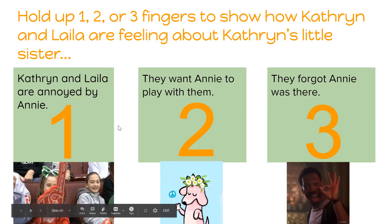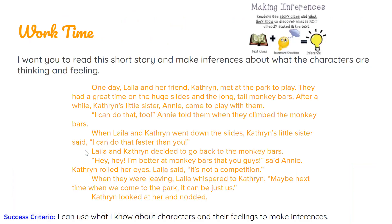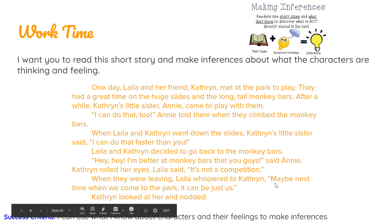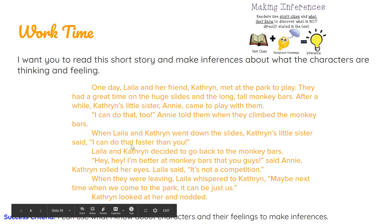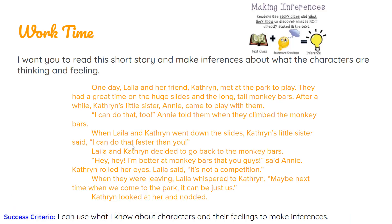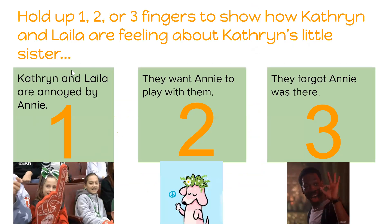Very good. The correct answer is one. Catherine and Layla are annoyed by Annie. It doesn't say that when I look back in the text — I don't see anywhere that they use the word annoyed or frustrated — but I can see their actions. It says here that Catherine rolled her eyes. Layla said, "It's not a competition." And when they were leaving, Layla said, "Maybe next time it can be just us," and Catherine agreed. Those context clues, and when I think about if I've ever been told "I can do it faster than you" or "I can do that too" — that makes me feel frustrated and annoyed. So putting together my background knowledge and my context clues, I can make the inference that Catherine and Layla are feeling annoyed. So one was the correct answer. If you got that correct, give me a silent cheer.